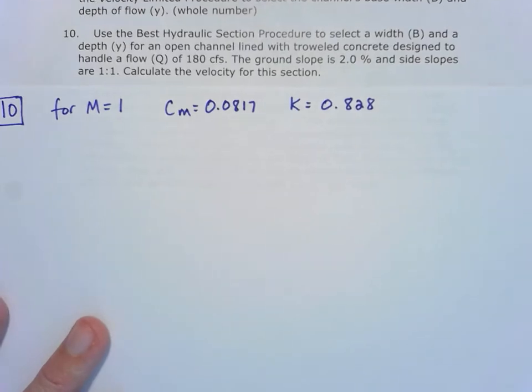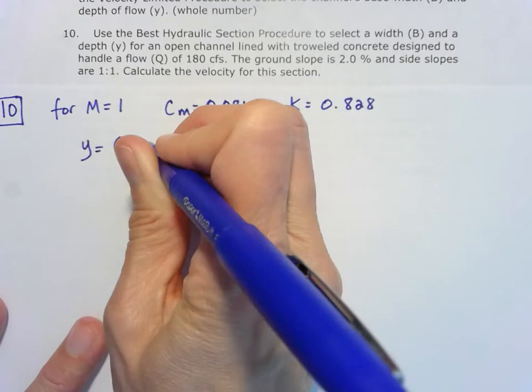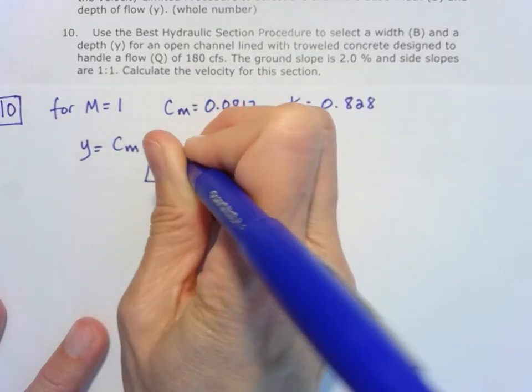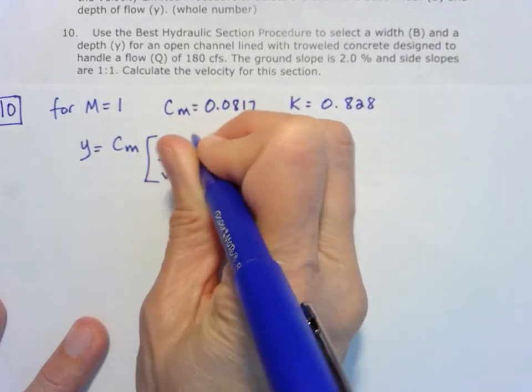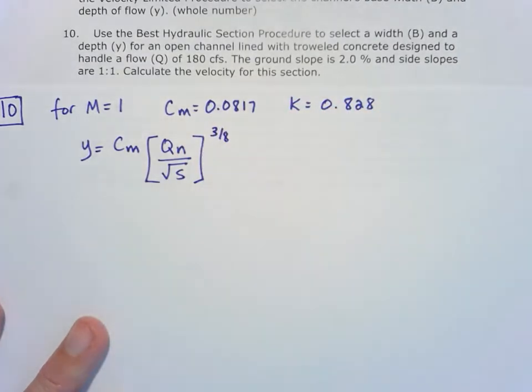Alright, so now that we've figured that out, we can go ahead and find Y, because Y is equal to C_M times the quantity of Q times Manning's N divided by the square root of S, all to the 3/8ths. Now we weren't given a Manning's N,